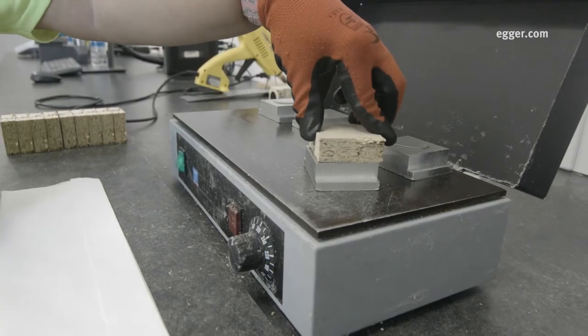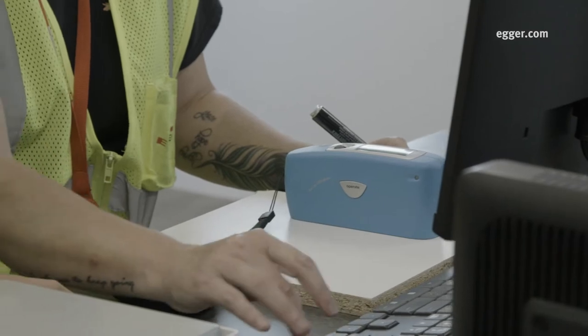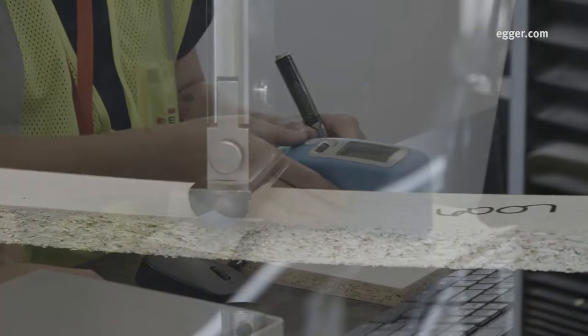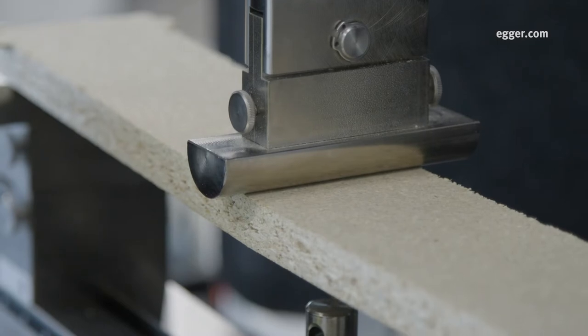The internal bond test checks the bond of the chips within the core layer. Surface soundness tests the strength of the surface, and bending strength determines how much force is required to break the board.